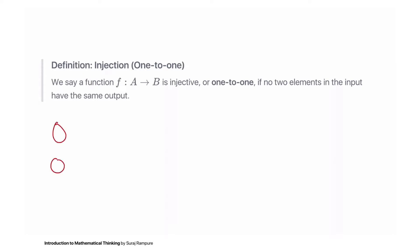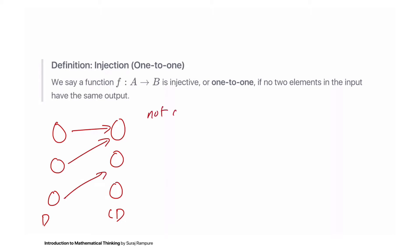Let's draw a picture. Suppose this represents our domain and this represents our codomain. This function that I've drawn here is not an injection because a and b both map to x. But for a function to be injective, every input needs to have a unique output.